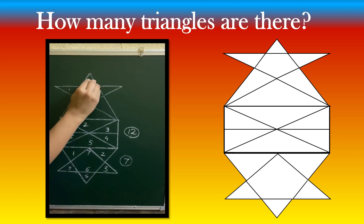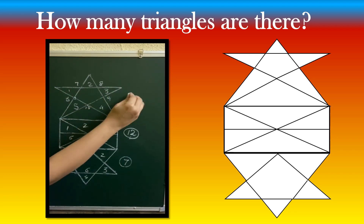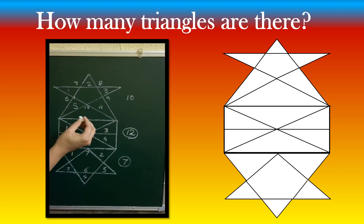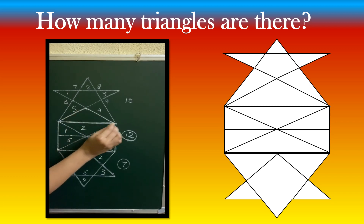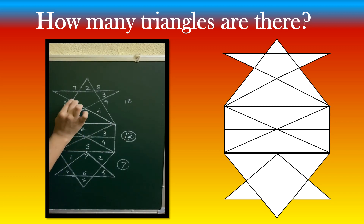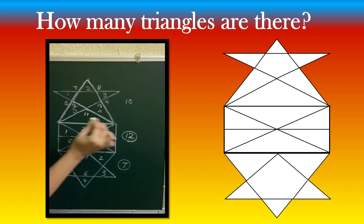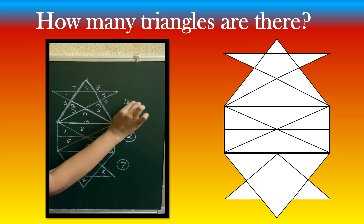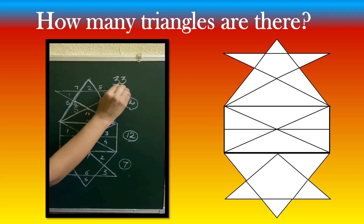Next, in this star: 1, 2, 3, 4, 5, 6, 7, 8, 9, 10. So 10 triangles. Then, taking this as the base, there are more triangles here: 11, 12, 13, and 14. So 14 triangles in this star. Let's count everything: 14 plus 12 plus 7 equals 33 triangles in this whole figure.